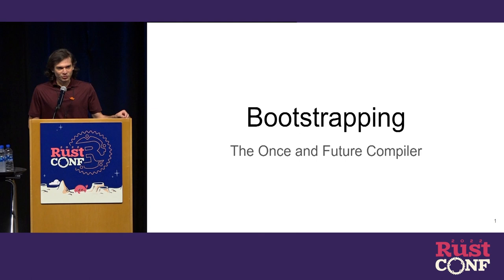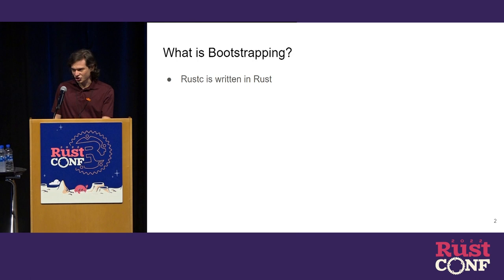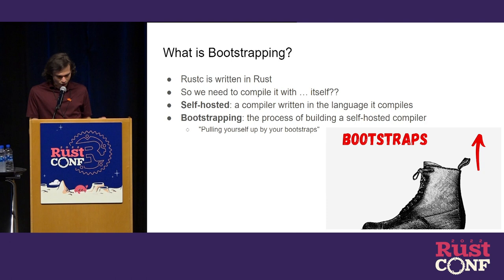My talk is called Bootstrapping, and that's probably already raised a bunch of questions, like what is bootstrapping and what does it have to do with compilers? The Rust compiler is written in Rust, which leads to some strange and interesting challenges. Because it's in Rust, that means you have to compile it with an existing Rust compiler. The way you do it is you can use an older version of the compiler. The Rust compiler is self-hosted, which means it's written in Rust, the same language that it compiles, and bootstrapping is the process of building it.